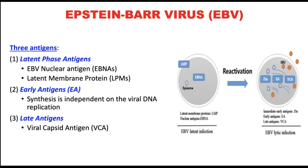Following primary infection, Epstein-Barr virus persists lifelong in the host. They undergo latency in memory B cells. The main viral genes involved in transformation and persistence of infected B cells are latent membrane protein 1 and latent membrane protein 2A. They undergo self-aggregation on the surface of infected B cells and serve as a signaling device which leads to proliferation of transformed memory B cells.